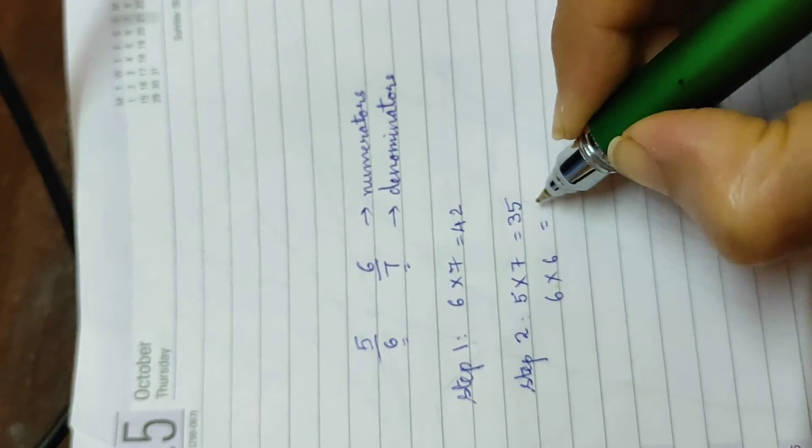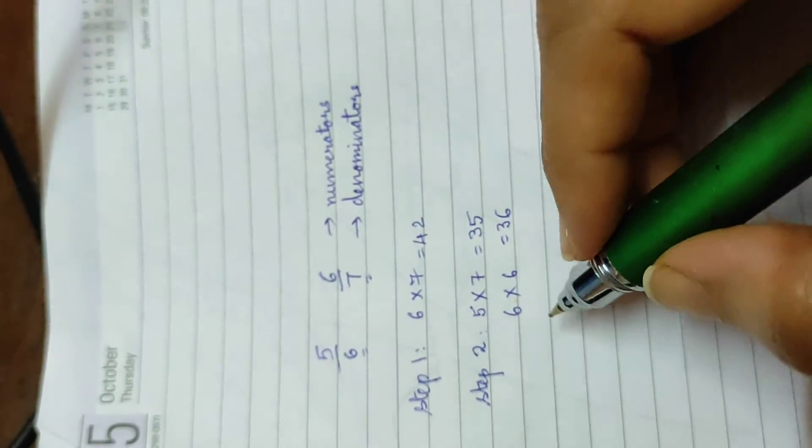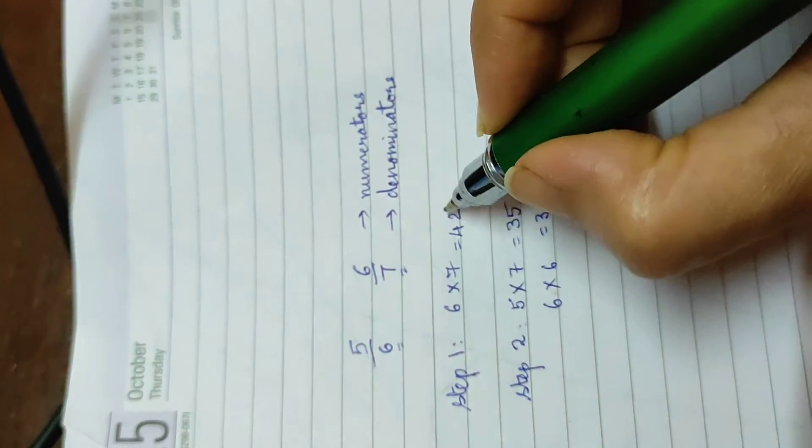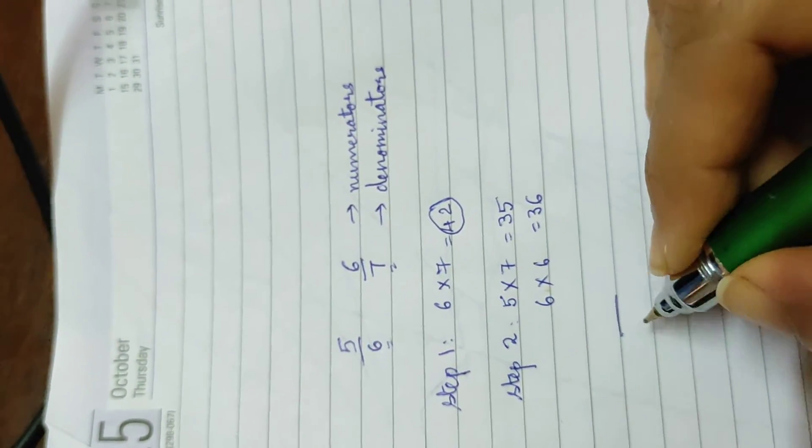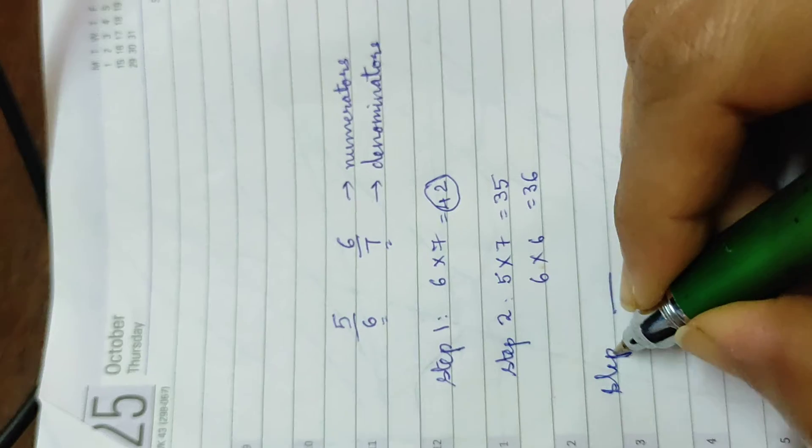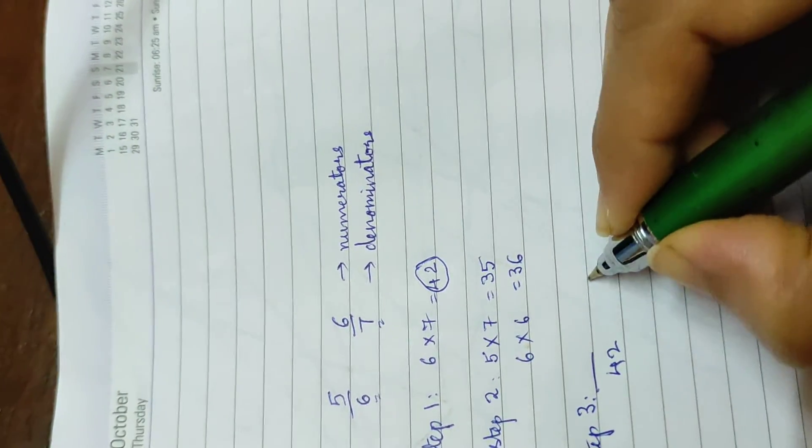So now let's write our fraction down. We know that both have the denominator 42, and so this is our step 3. I'll put the denominators. How does it help us to do this?